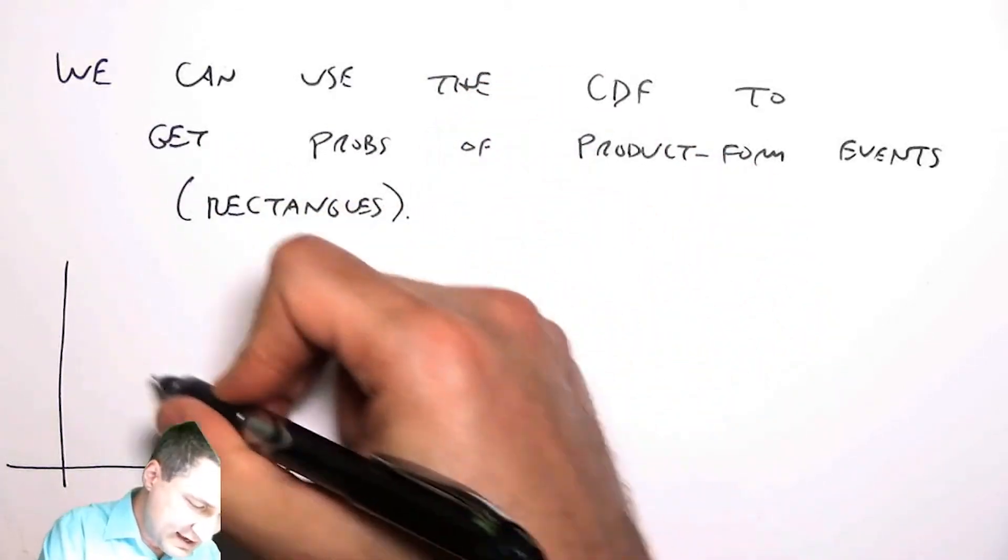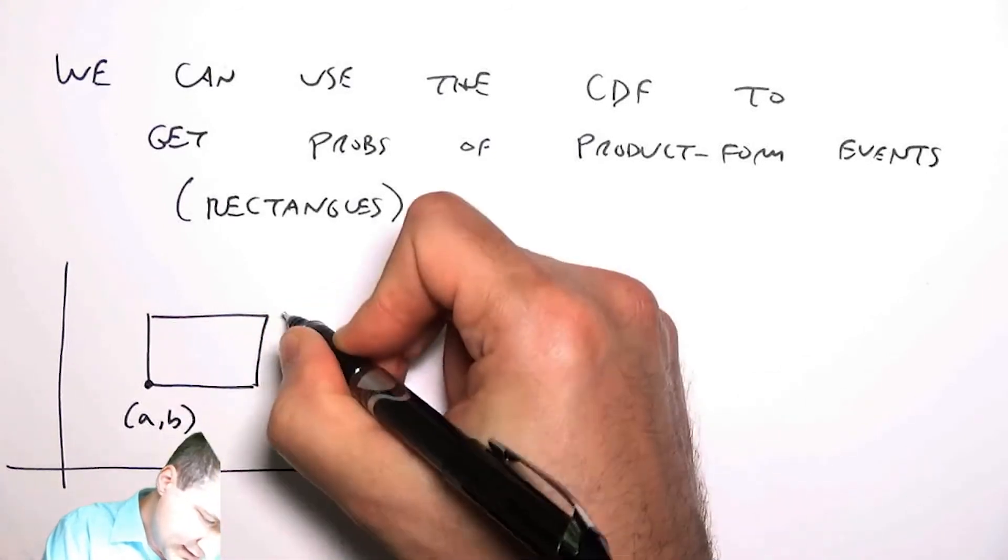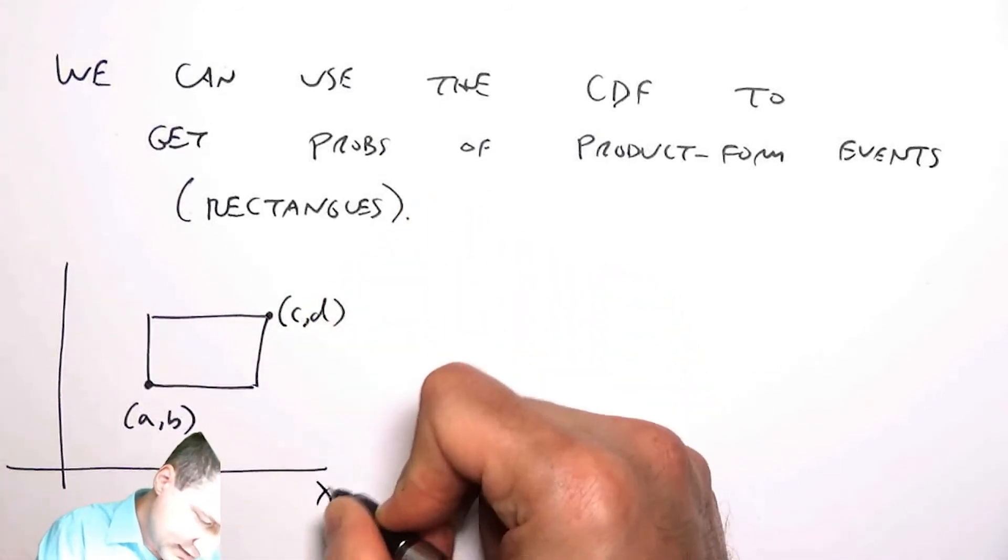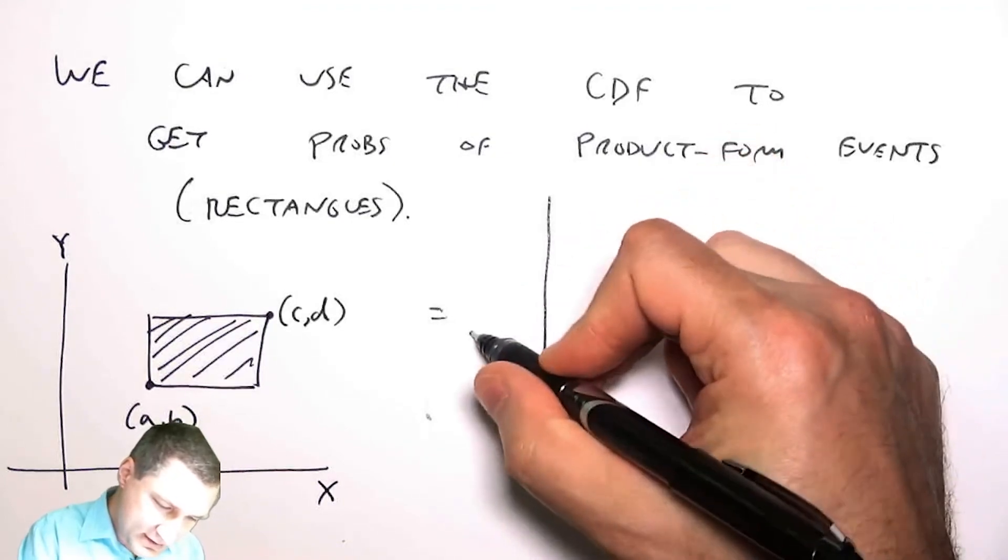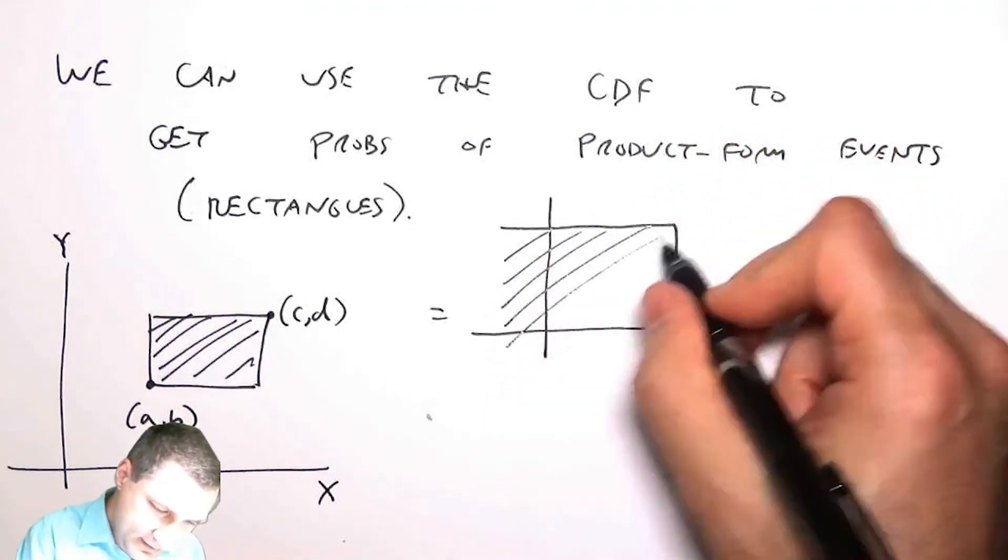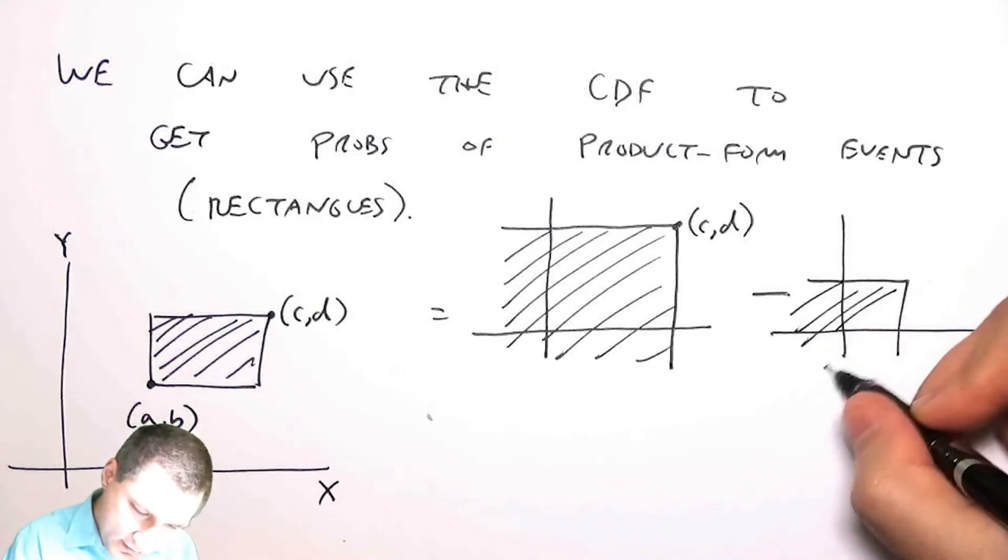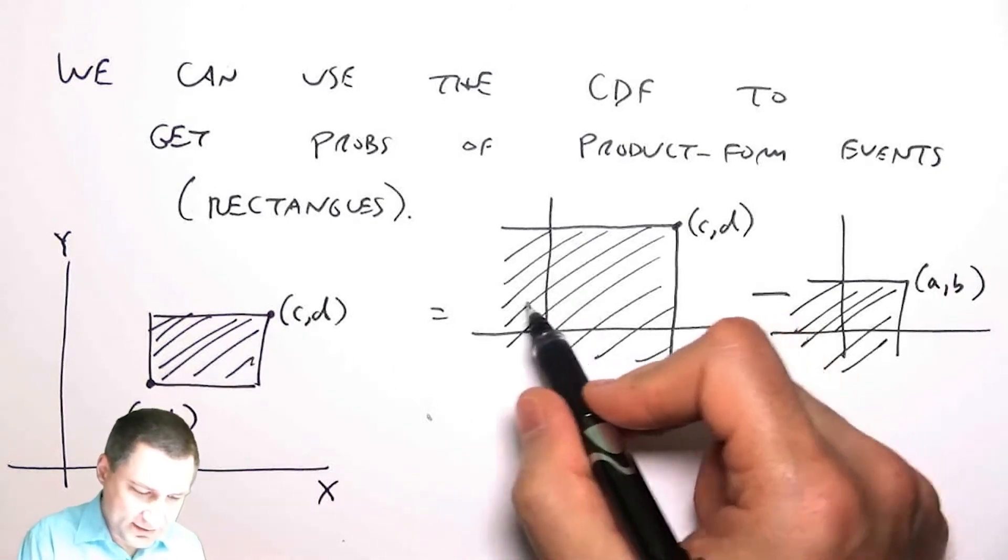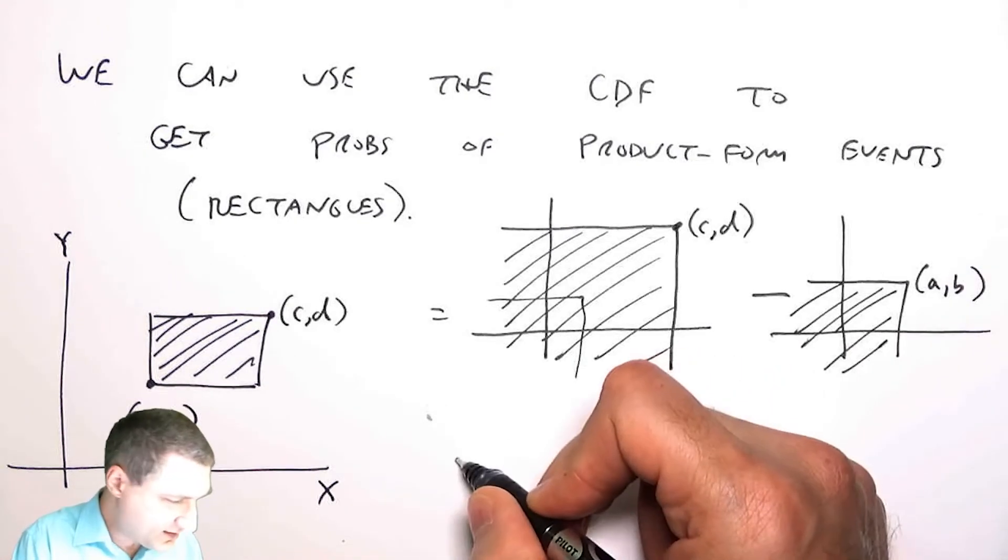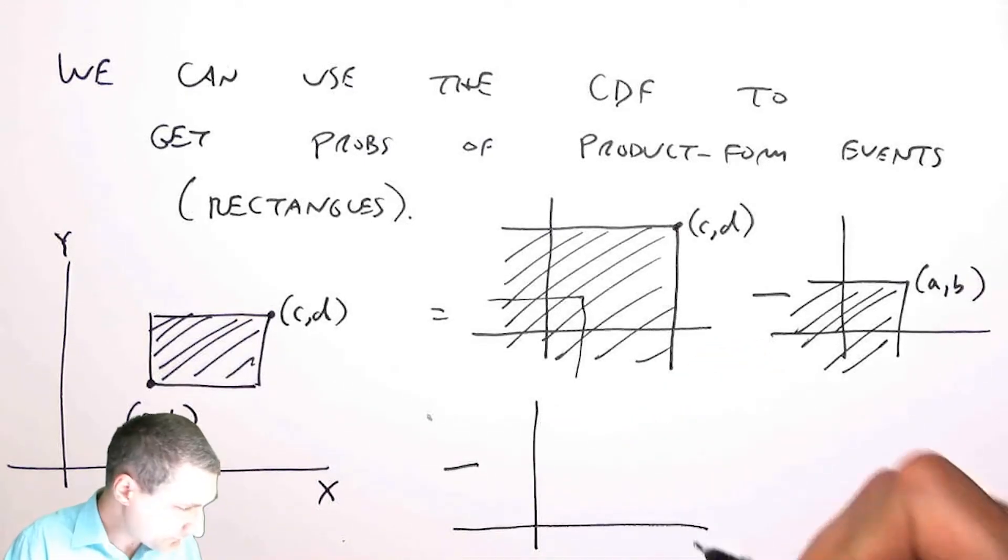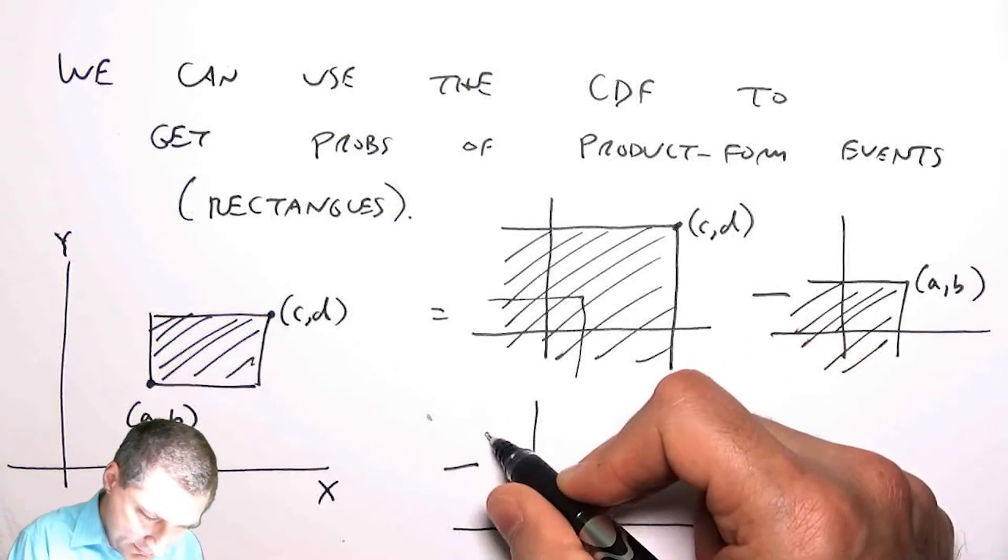The idea is, suppose I have an event that is bounded by something like this. This point is a comma b, and this point is c comma d, and I want to know what's this probability. Well, I can get it by looking at the CDF here starting from c comma d, minus the CDF here starting from a comma b. Now if I do that, that's like saying, okay, well I took this and I subtracted this part off. I still need to subtract some more stuff off. Let me just kind of think about this a different way.